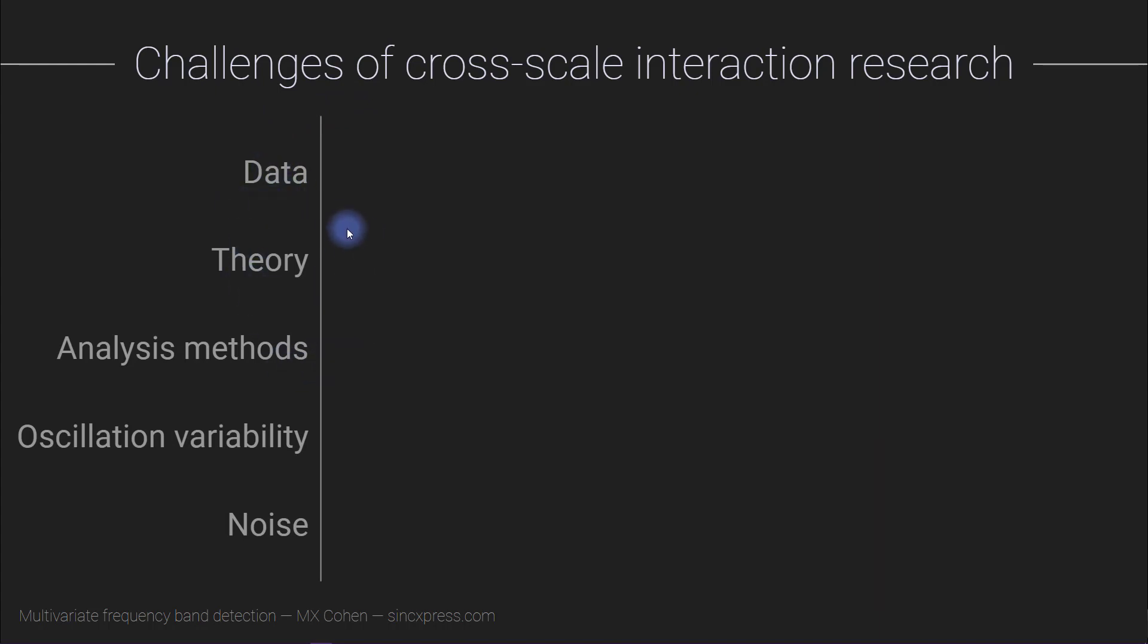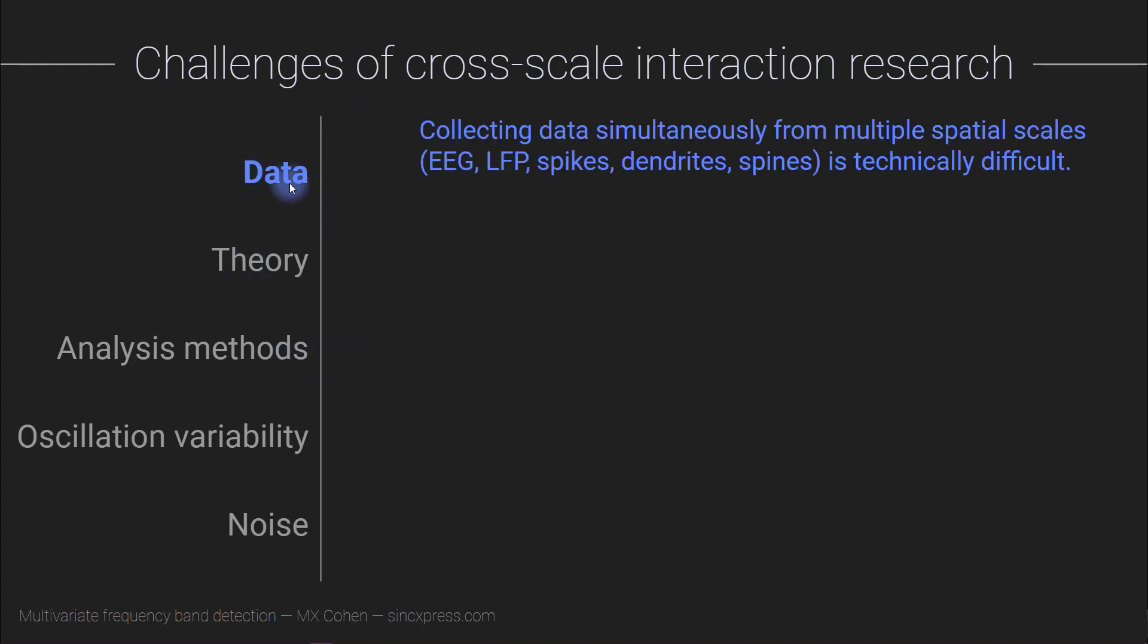One challenge is in simply acquiring data simultaneously across multiple spatial scales, so something like recording EEG and LFP and spikes simultaneously. This is certainly not impossible. There are many great labs around the world who are beginning to collect these kinds of data, but it is still quite difficult. It is technically demanding, and most neuroscience research labs are focused specifically on one spatial scale, for example, dendrites or only measuring EEG.